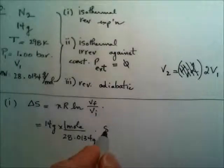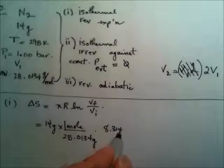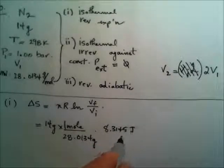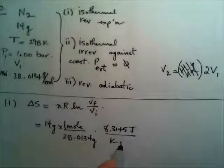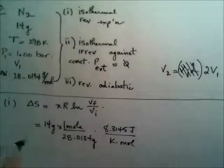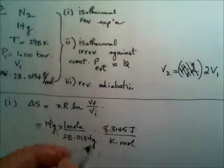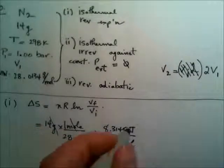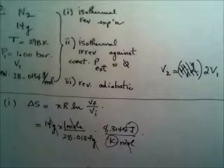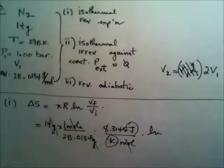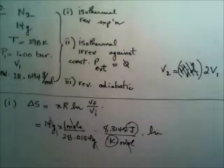So R, I'll use the 8.3145 joule per kelvin mol. The rest is unitless because it's ln. Demonstrate that my units are canceling except for the ones that I want. ln of V final over V initial.